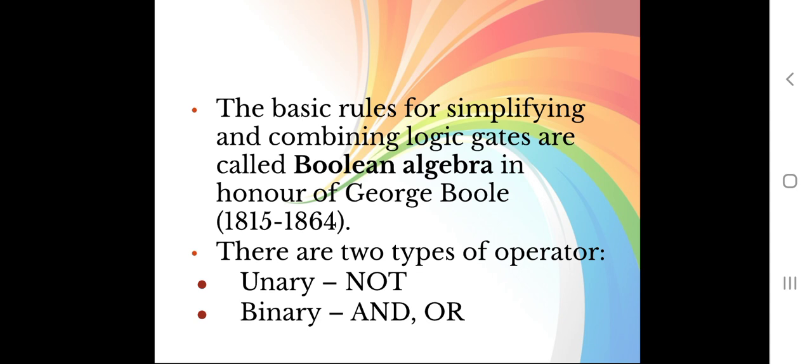The basic rules for simplifying and combining logic gates are called Boolean algebra, in honor of George Boole (1815–1864), who introduced this to us. There are two types of operators. The first is unary — the NOT gate, which has only one input and one output. If input is true, output becomes false; if input is false, output becomes true. In other words, if input is 1, output is 0; if input is 0, output is 1.